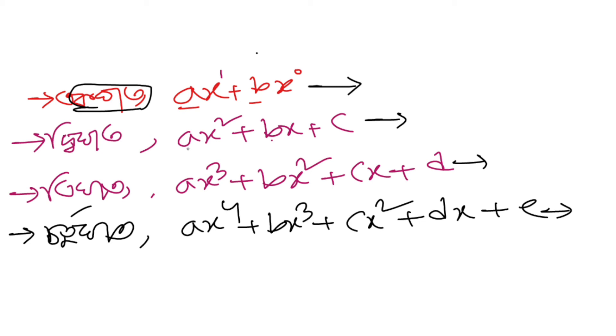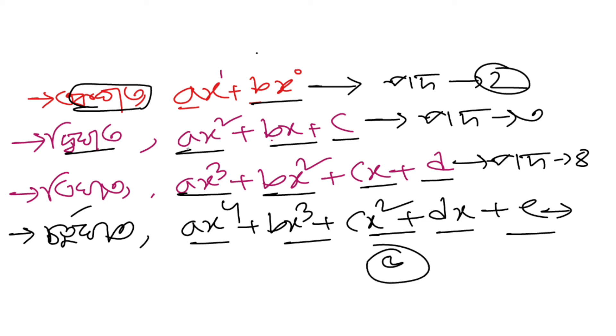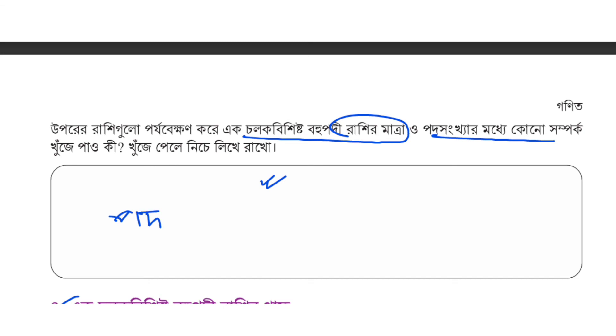This pattern shows us the general structure of polynomials. The degree tells us how many terms we have. Each position corresponds to a specific power of x. I hope this explanation helps. Please watch my next video for more. See you in the next video.